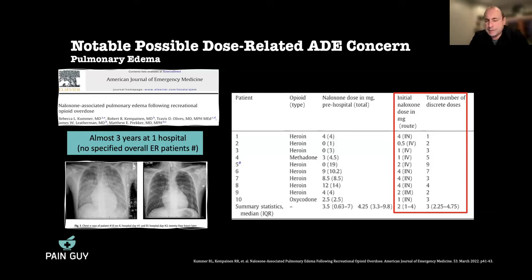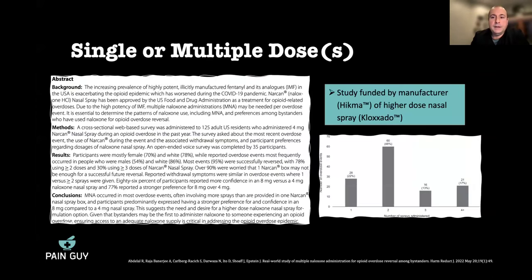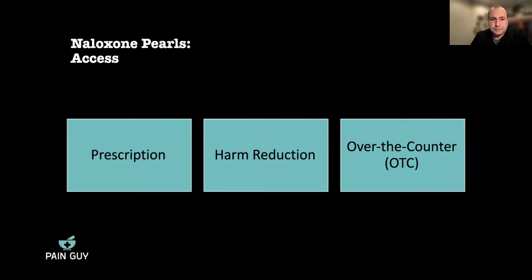Naloxone also has minor delta and kappa opioid receptor activity, which could theoretically cause tachycardia or hallucinations, though these are uncommon. Mark then discusses a West Virginia study on naloxone expiration dates — featured on CNN — which found naloxone to remain effective a year past expiration. He is not advocating ignoring expiration dates but notes humorously that Mediterranean sea salt formed 250 million years ago still has an expiration date on the package.